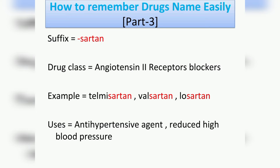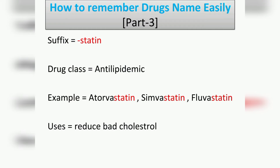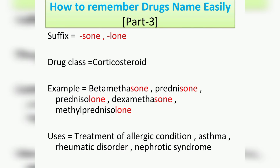The next suffix is '-sartan', which belongs to the drug class anti-hypertensive agents; it reduces high blood pressure. The following suffix is '-astatin', which belongs to the drug class anti-lipidemic agents. Examples include atorvastatin, simvastatin, and fluvastatin, and their usage is to reduce blood cholesterol levels.